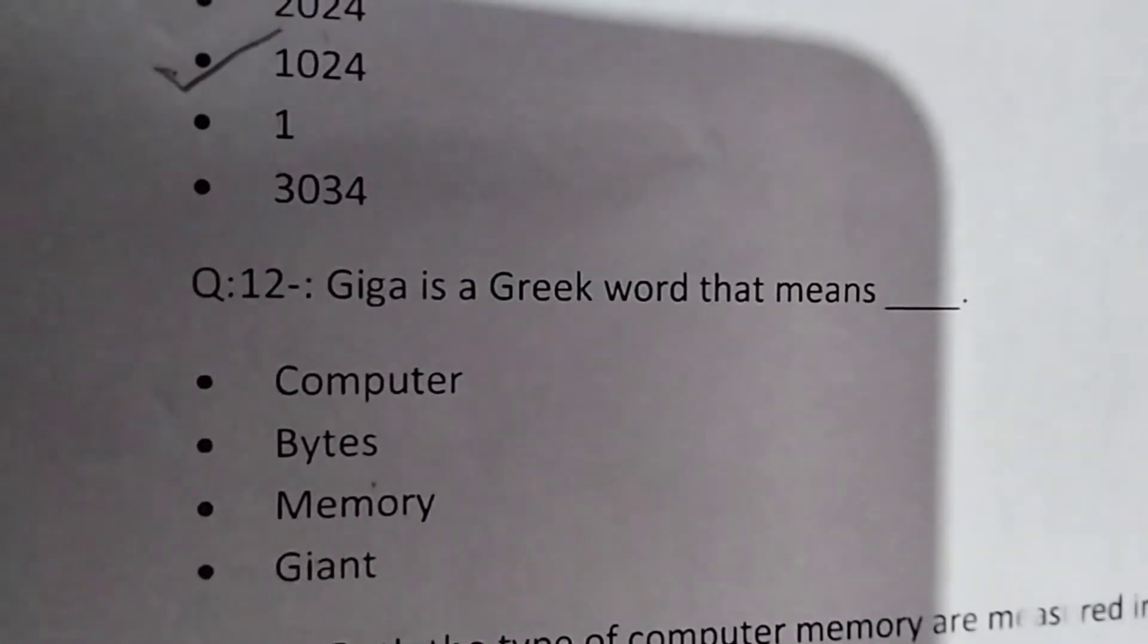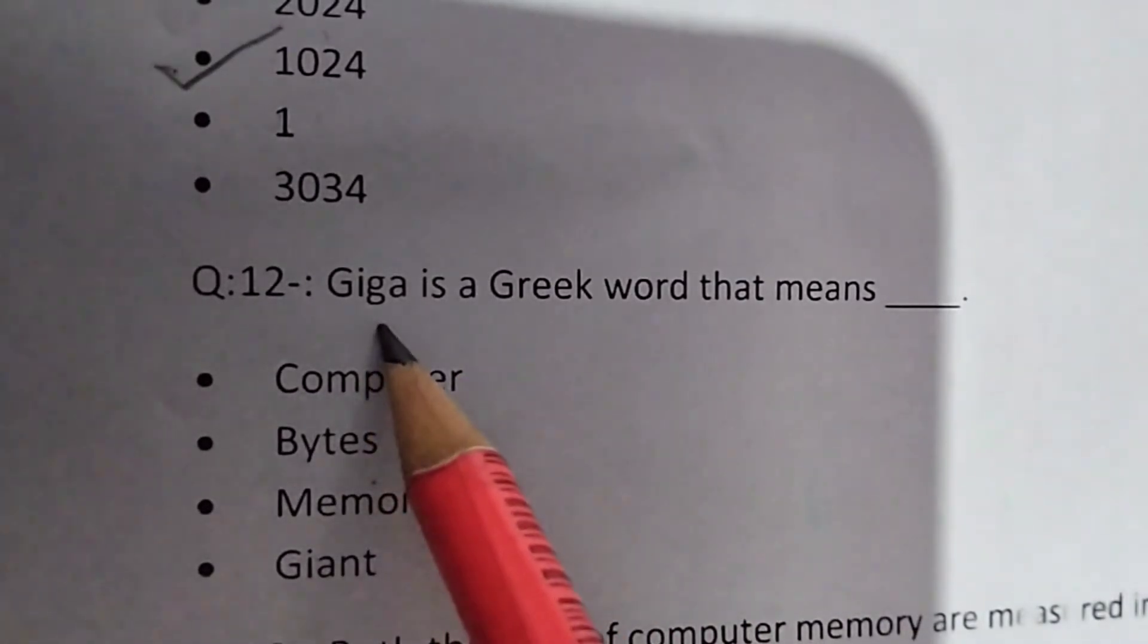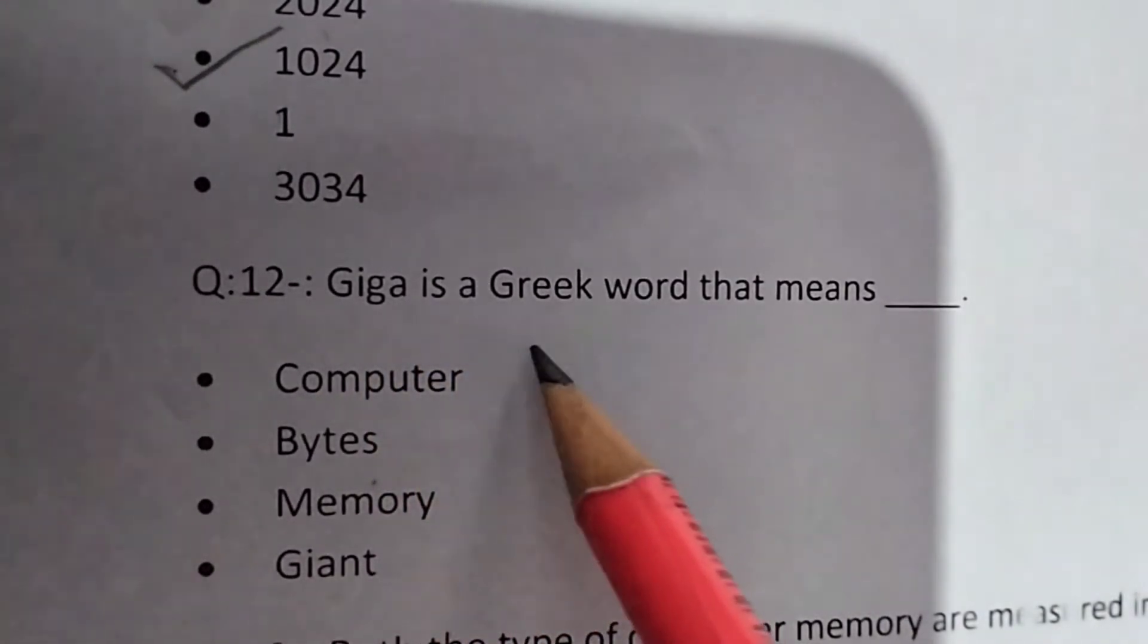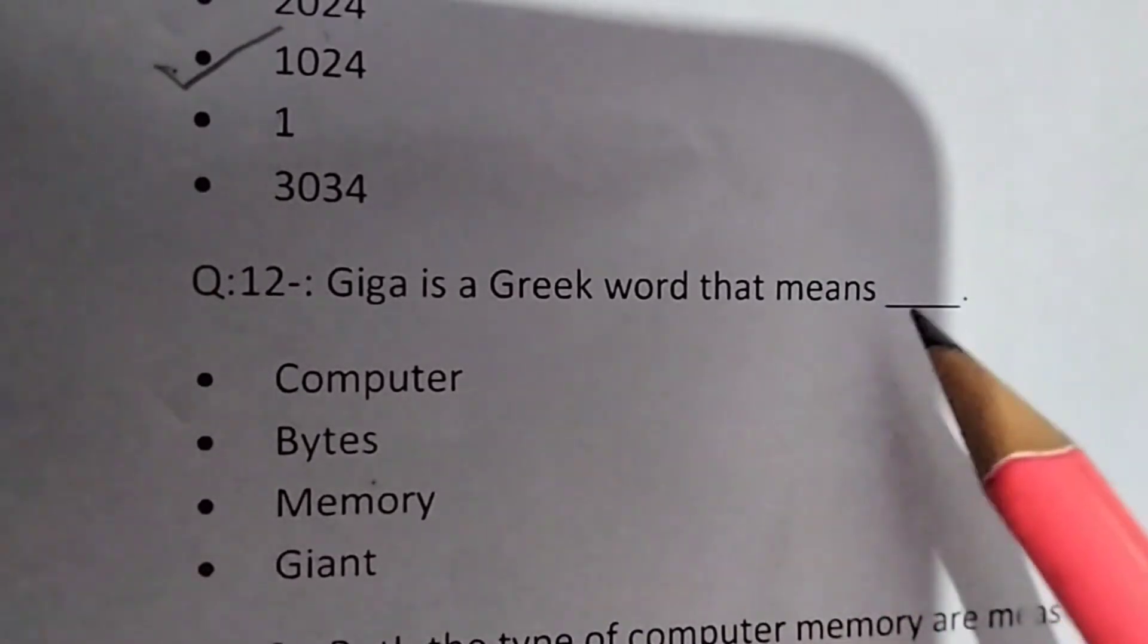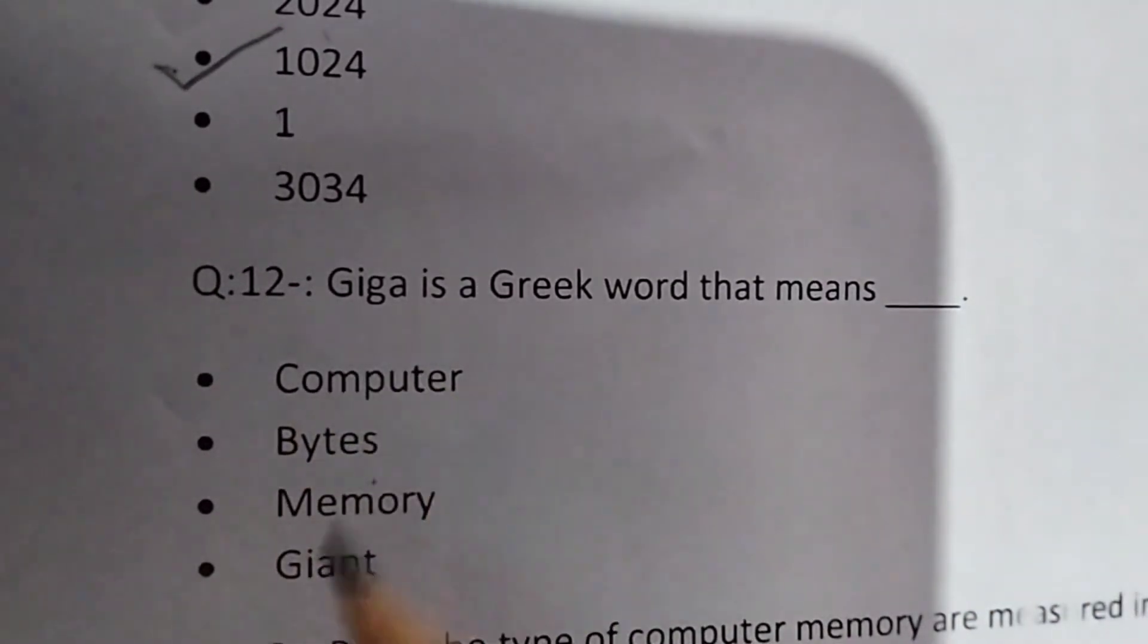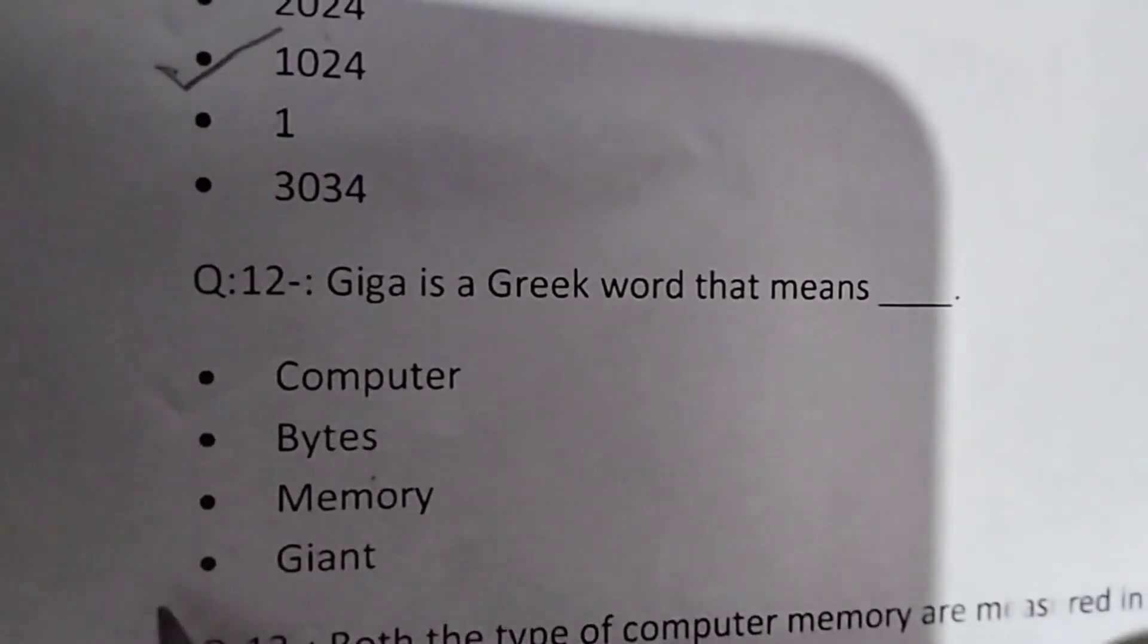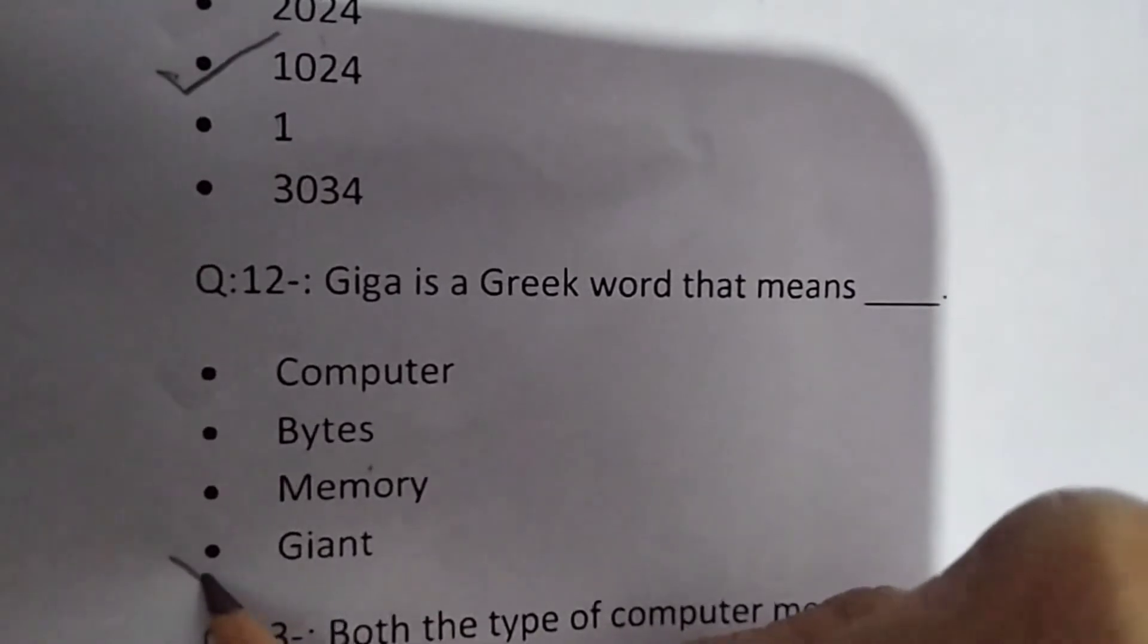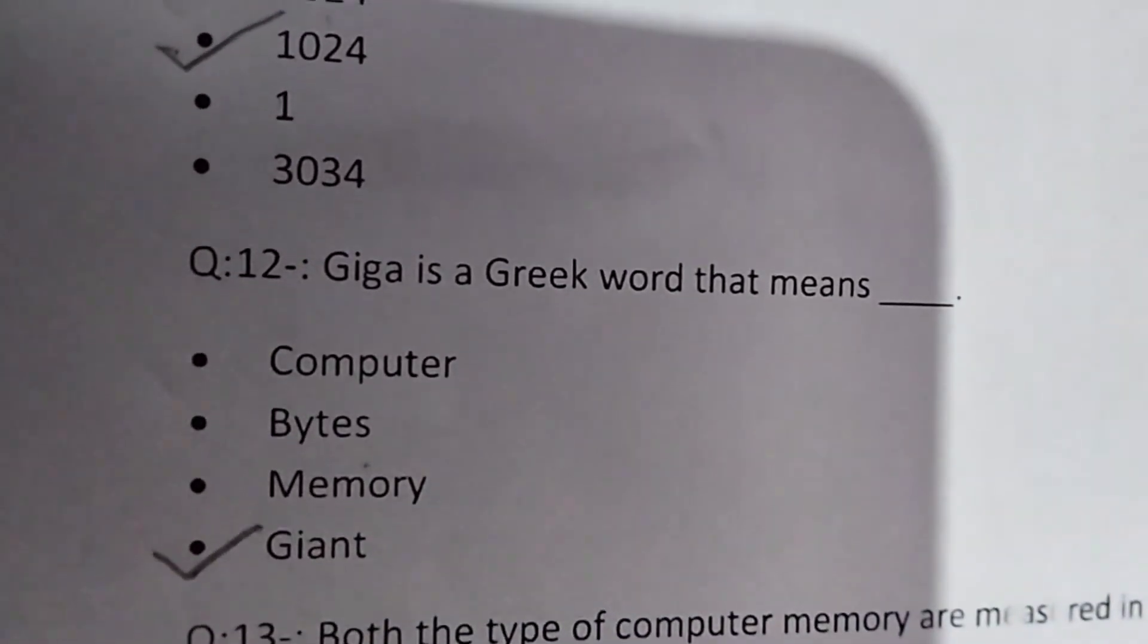Next is: Giga is a Greek word that means computer, bytes, memory or giant. So answer is giant. Greek word which one is it? Giant.